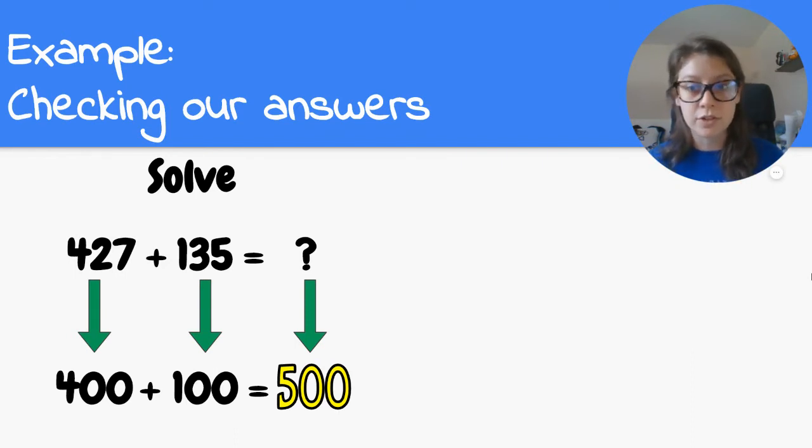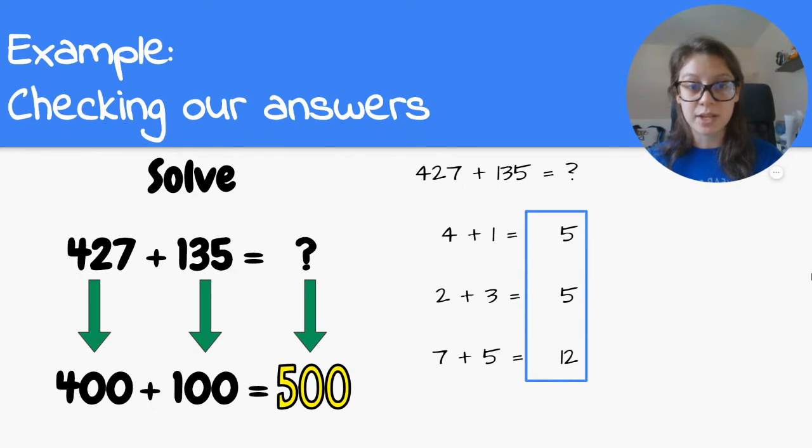So I'm going to start solving. 427 plus 135 equals something. Again, I'm going to use my partial sum strategy. 4 plus 1 equals 5. 2 plus 3 equals 5. 7 plus 5 equals 12. Then I'm going to add these numbers up. So 5 plus 5 plus 12. 5 plus 5 equals 10, plus 12 more equals 22. So my answer is 22, right?